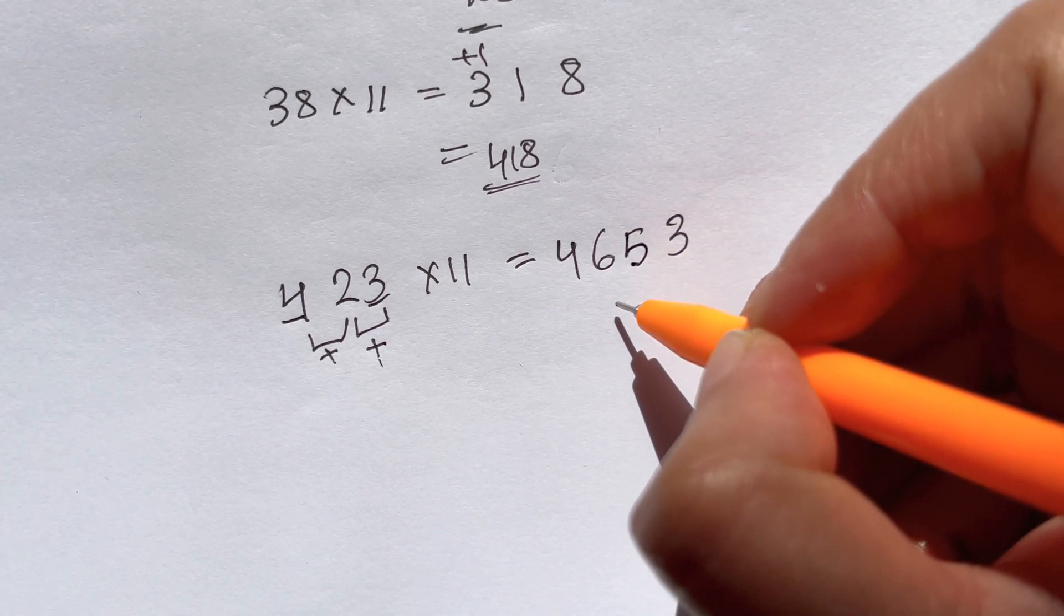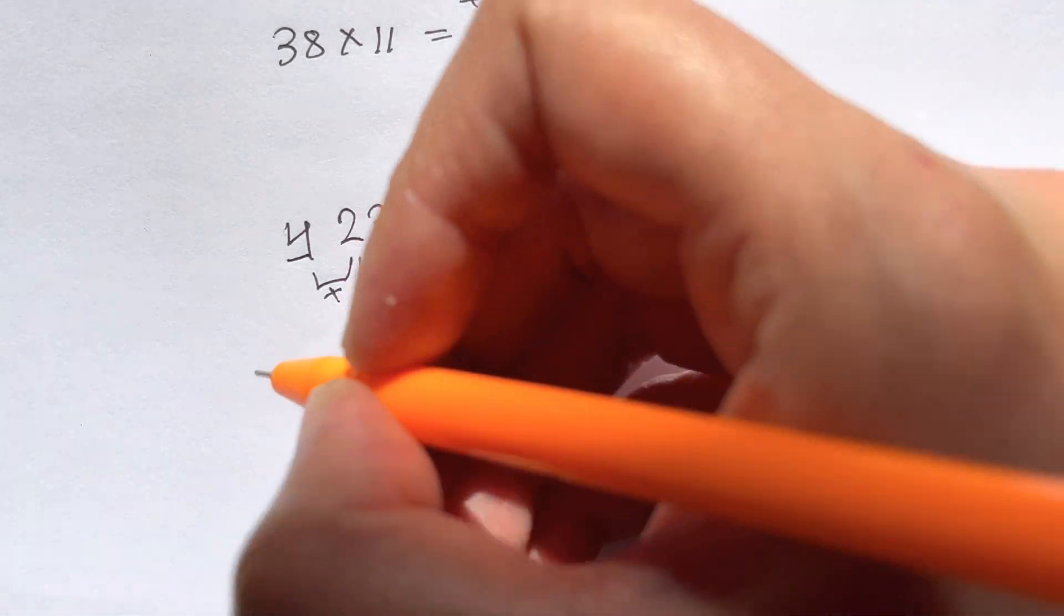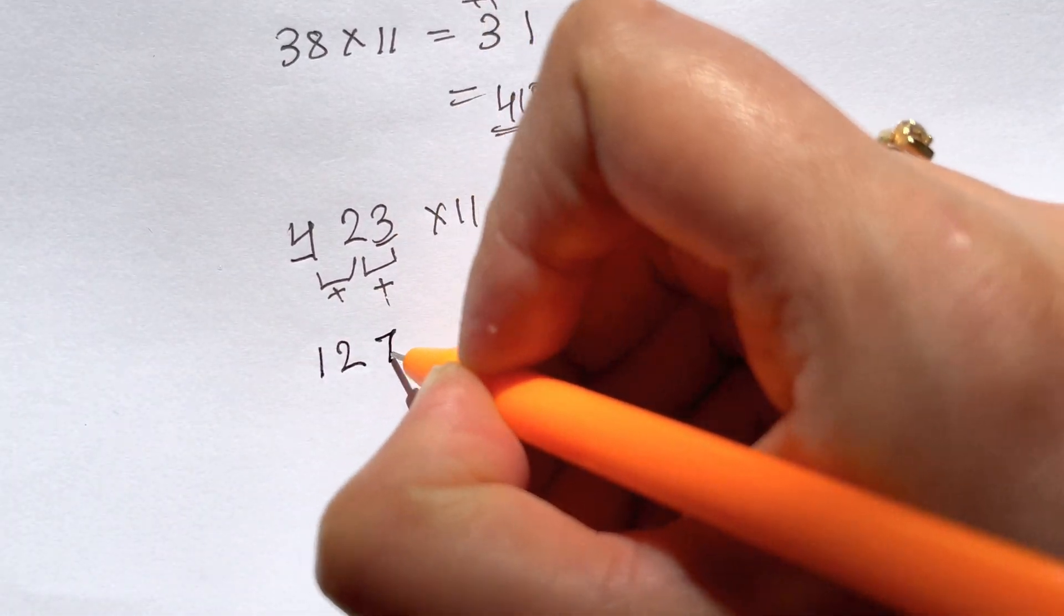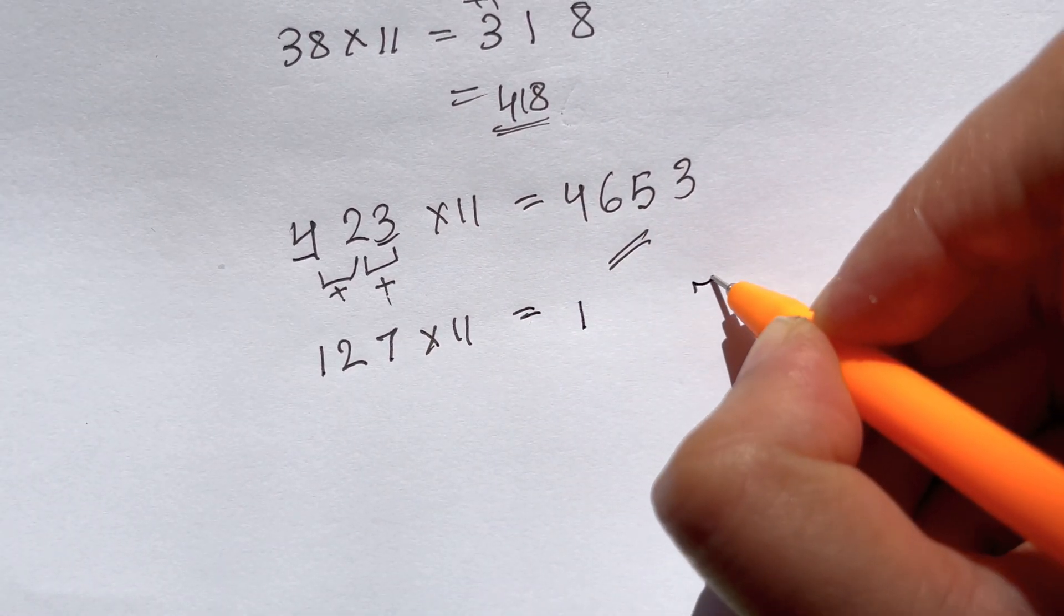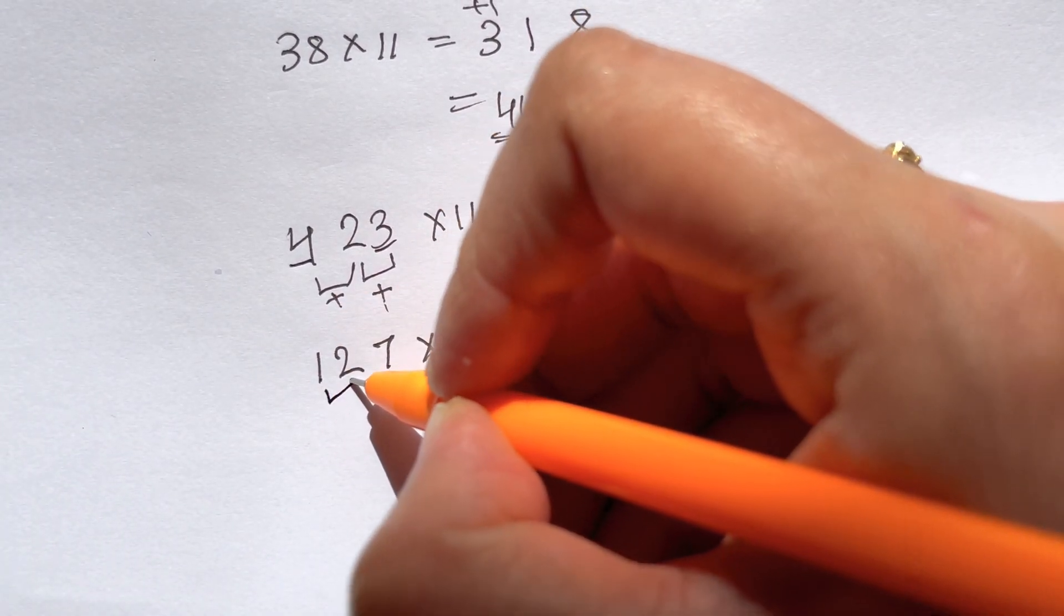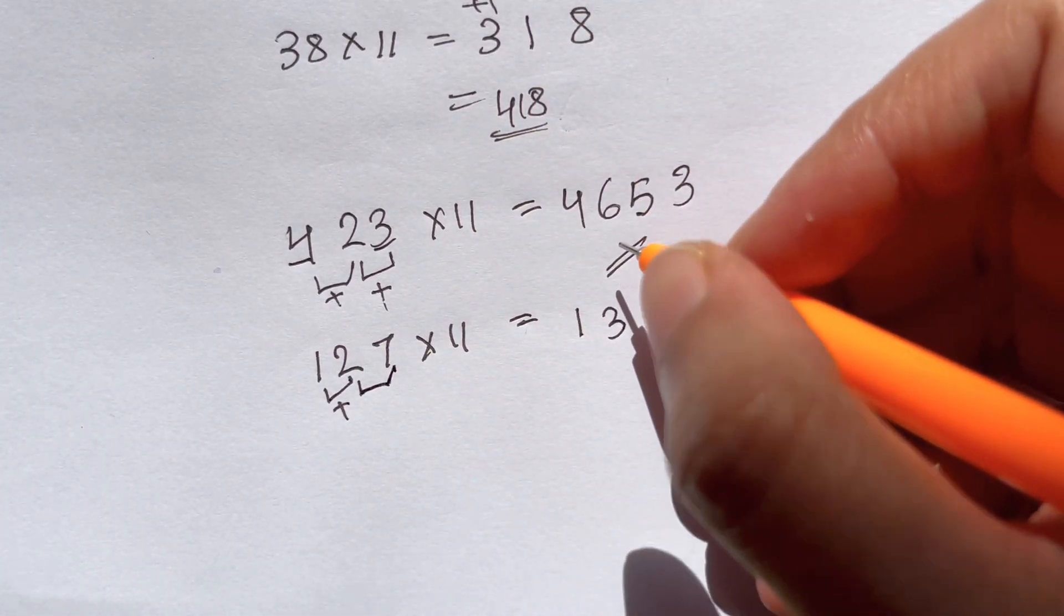Now let me give you another example like 127 times 11. Just write down 1 and a 7 and you just go on adding up. 2 plus 1 is 3, 7 plus 2 is 9. So your answer is 1397.